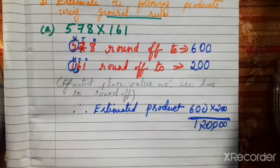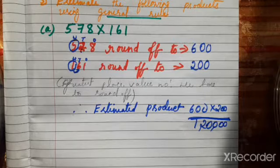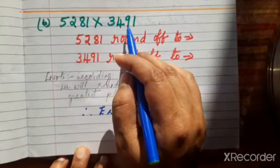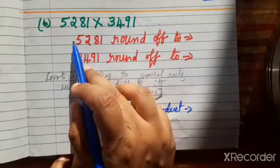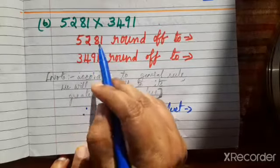By using the general rule we can get different answers because we choose the place value. But the general rule means we must take the greatest place value of the number. Now question (b): estimate the following product using the general rule. The question is 5281 into 3491. Both are four-digit numbers in the thousands place.